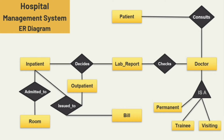Now let's see the cardinality ratio between these entities. One patient can consult many different doctors for different diseases, and one doctor can check many lab reports. One or many lab reports can decide whether a patient requires inpatient care or outpatient care, so here we can add a one-to-many relation for lab report.